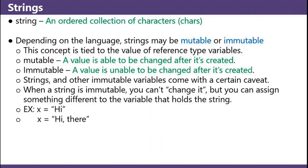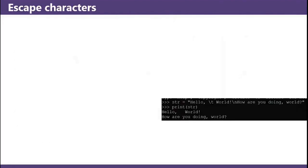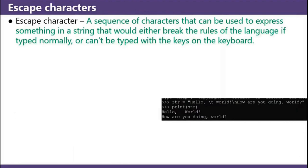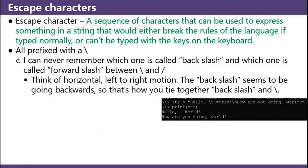When a string is immutable, you can't change it, but you can assign something different to the variable that holds the string. Example: x equals 'hi'. Now x equals 'hi' there. You've changed what the value of x is, but you haven't changed the string 'hi' itself. Escape characters: a sequence of characters that can be used to express something in a string that would either break the rules of the language if typed normally, or can't be typed with the keys on the keyboard. All prefixed with a backslash.